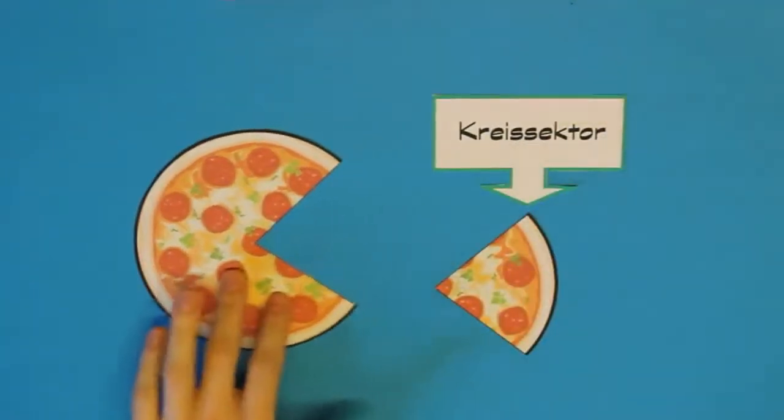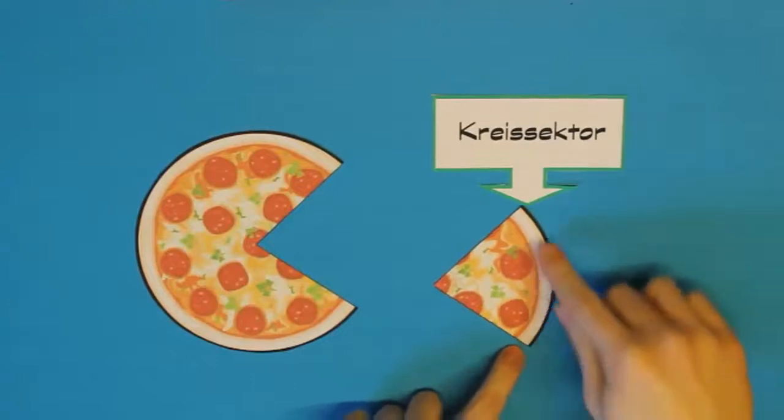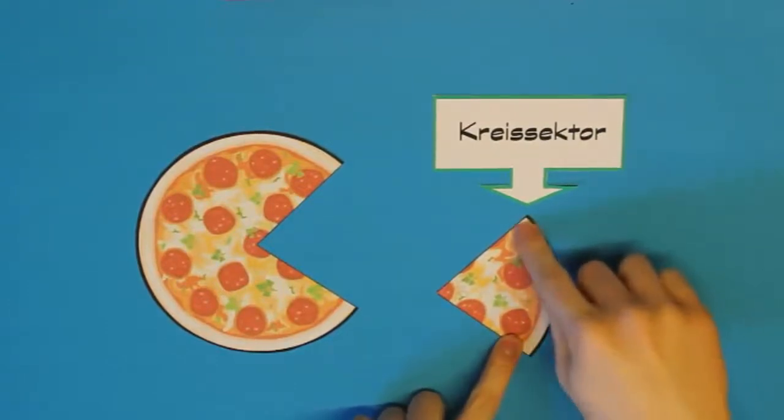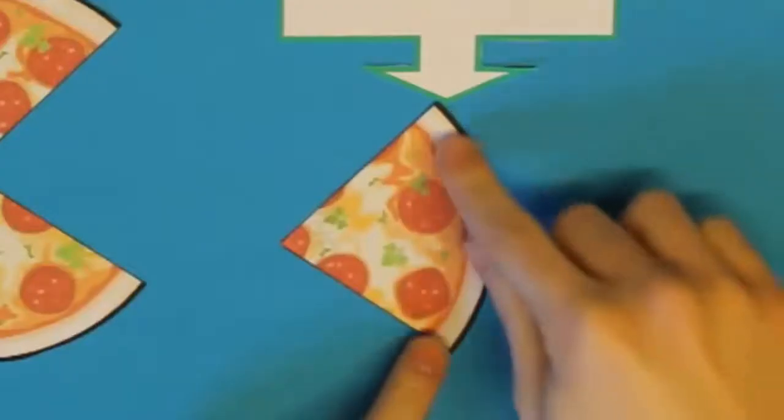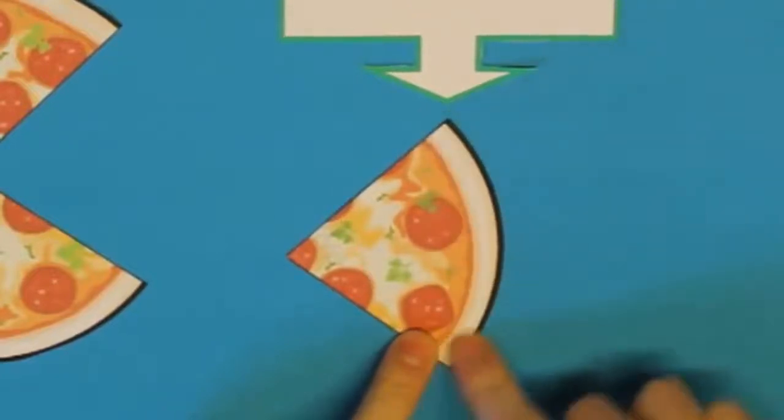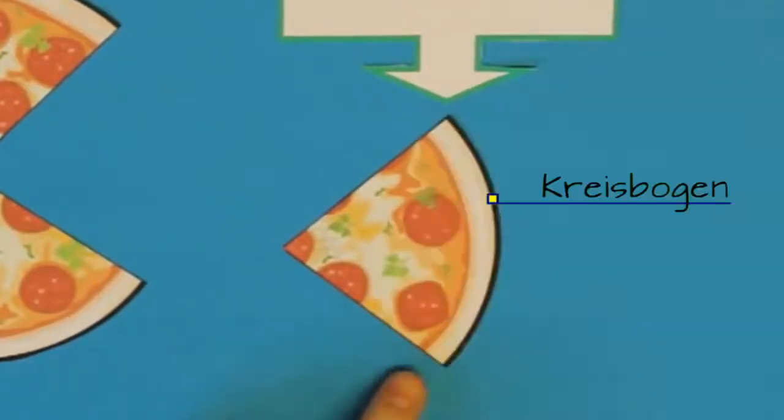Ein Kreissektor besteht immer aus einem Teil der Kreislinie hier, die fetter in schwarz. Diesen Teil der Kreislinie nennt man den Kreisbogen des Kreissektors.